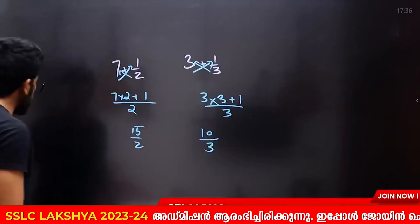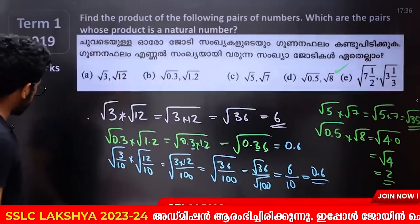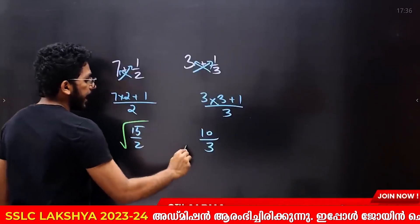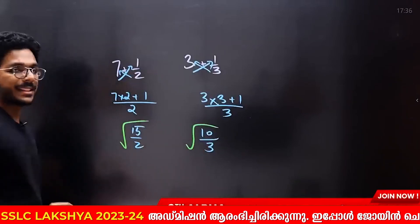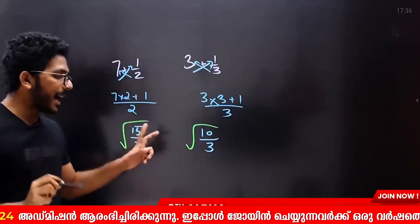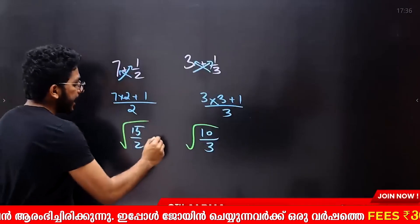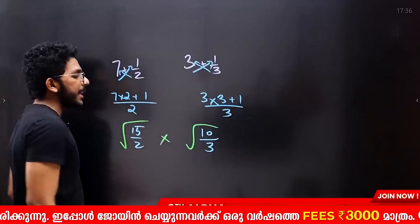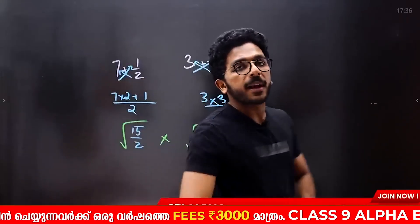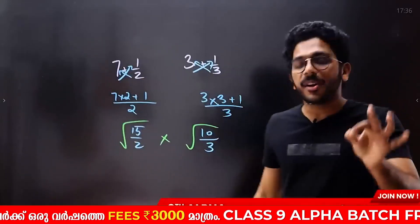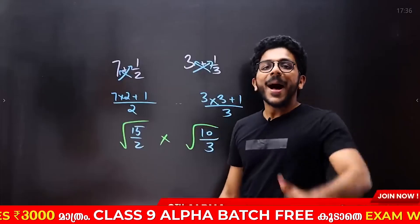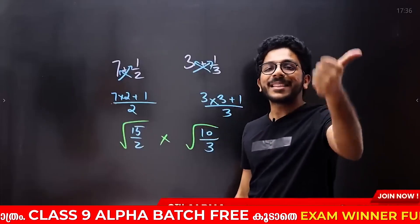Do you have these two roots? Yes. Do you multiply these two numbers? Therefore you will get the answer. Do you see these two numbers? Do you see the natural number? Yes or no? All the best.